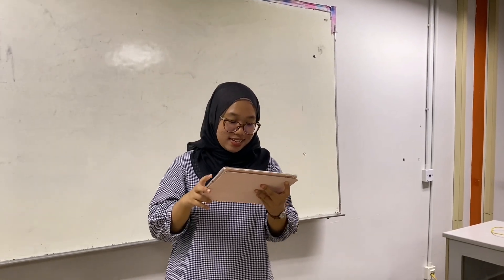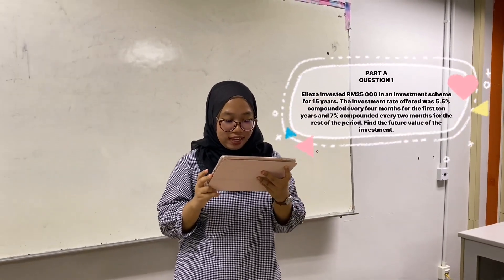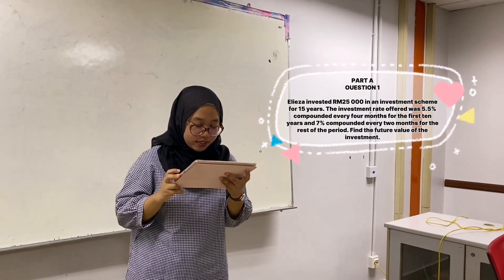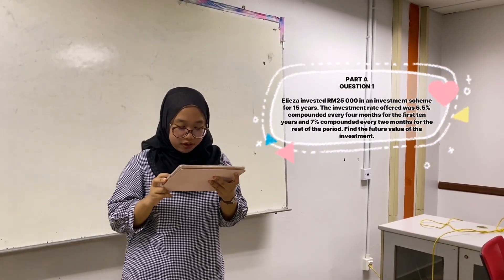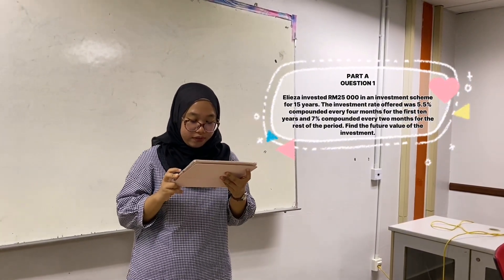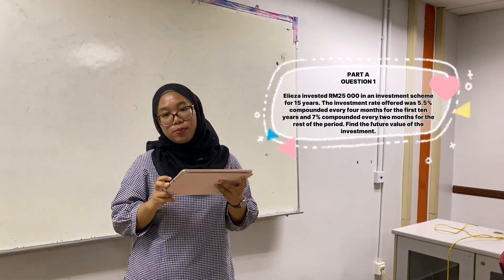So this is the question for Part A Question 1. Let's read the question first. Aliza invests $21,000 in an investment scheme for 15 years. The investment rate offered was 5.5% compounded every 4 months for the first 10 years, and 7% compounded every 2 months for the rest of the period. Find the future value of the investment.